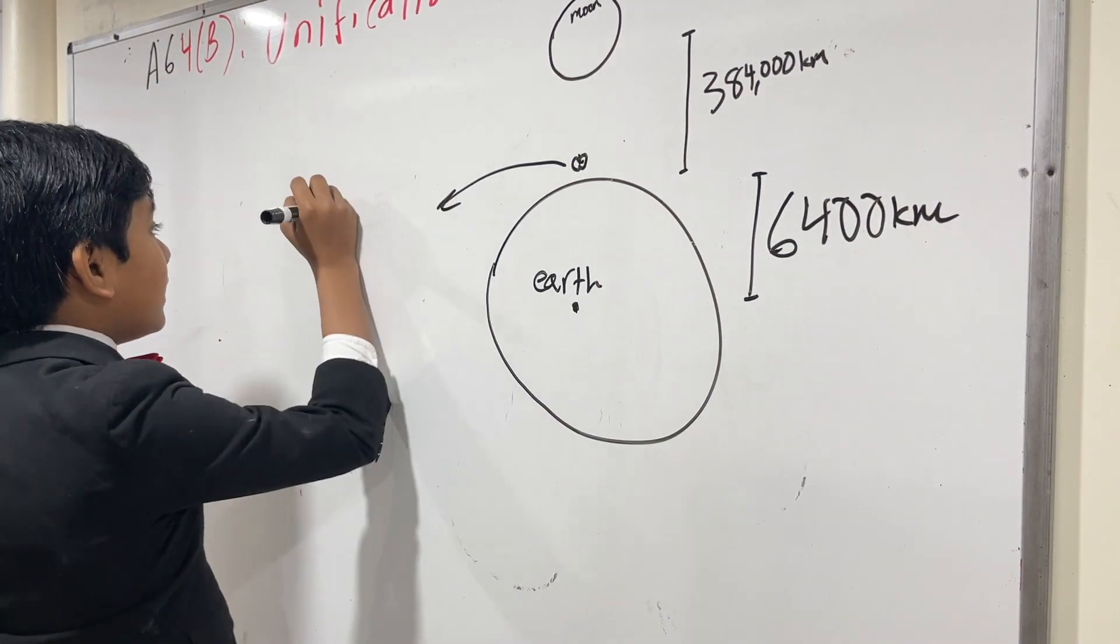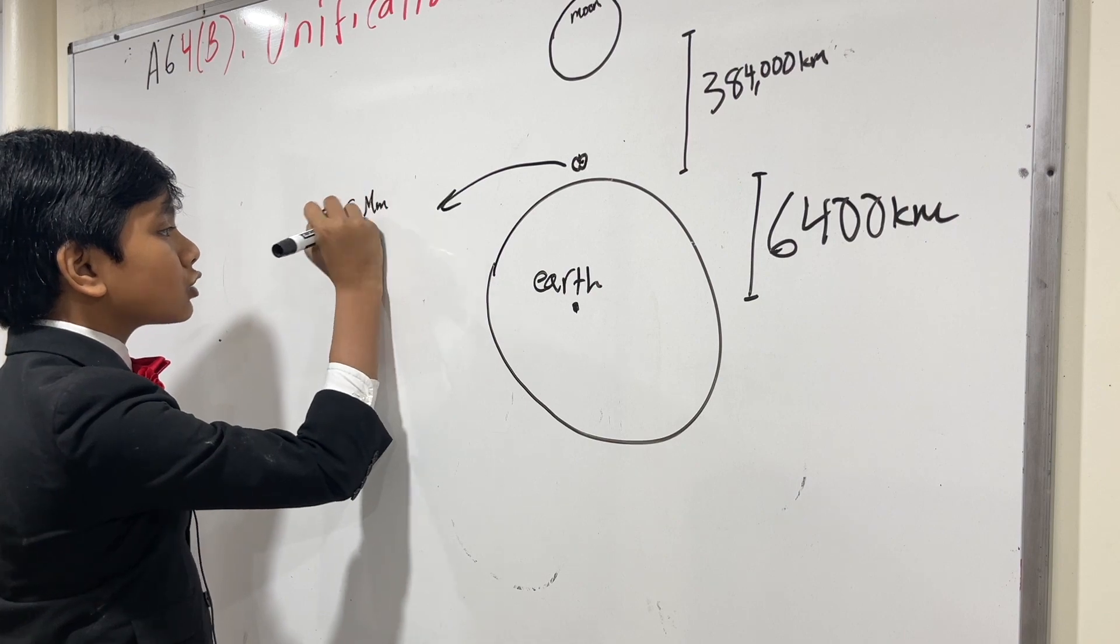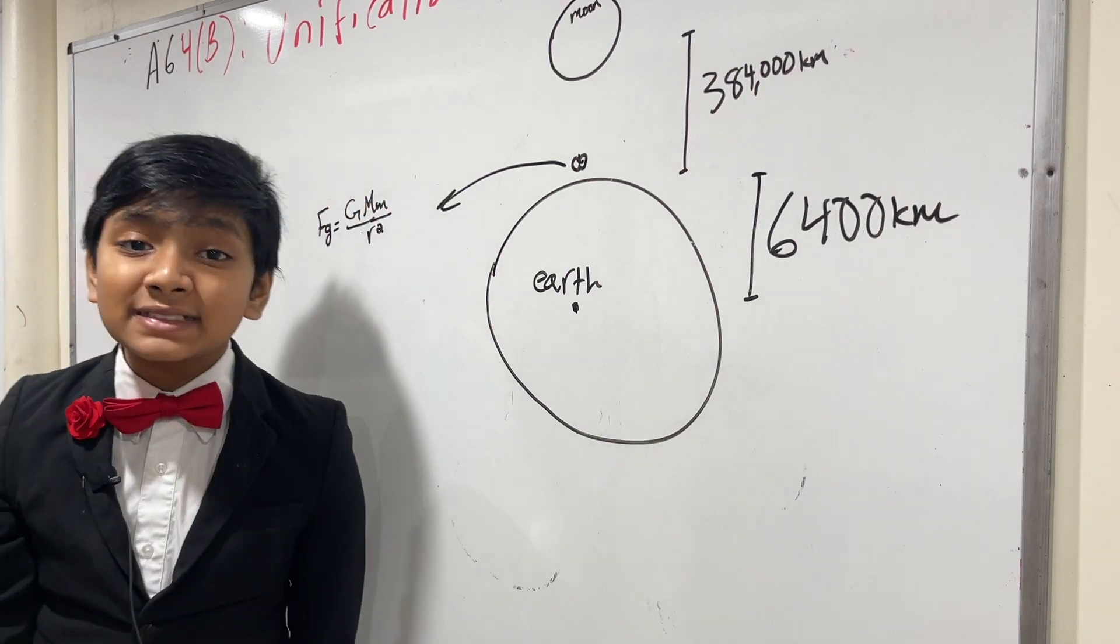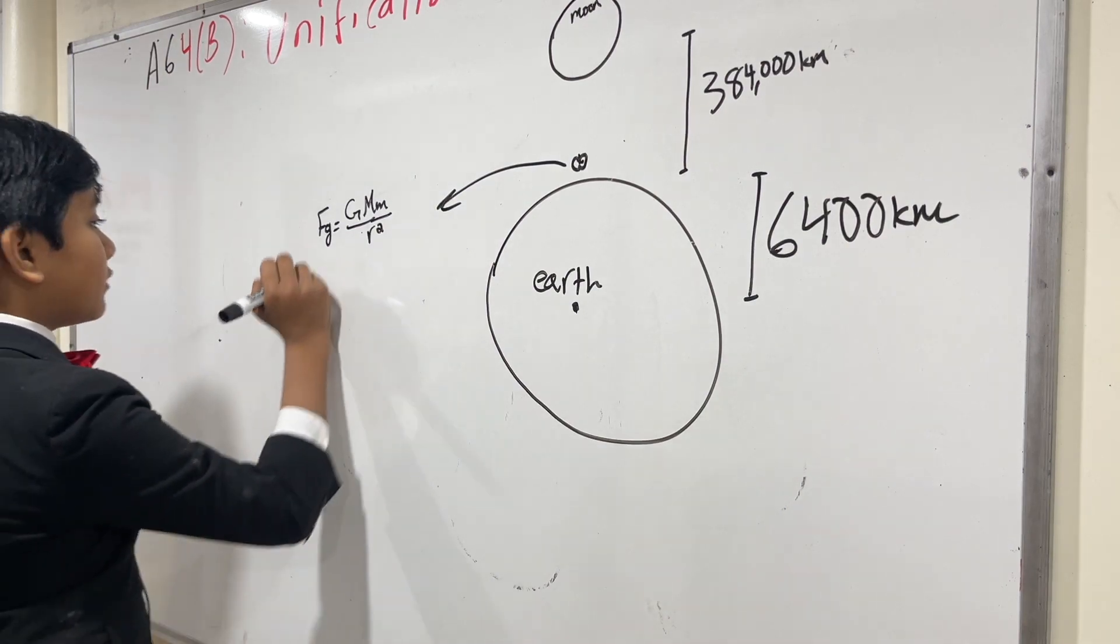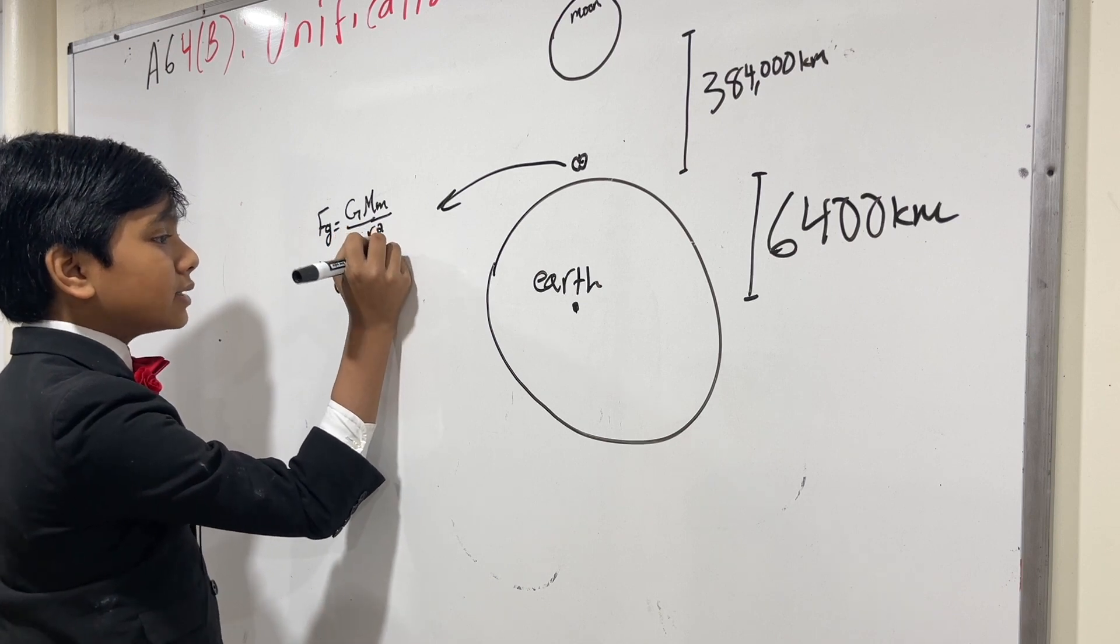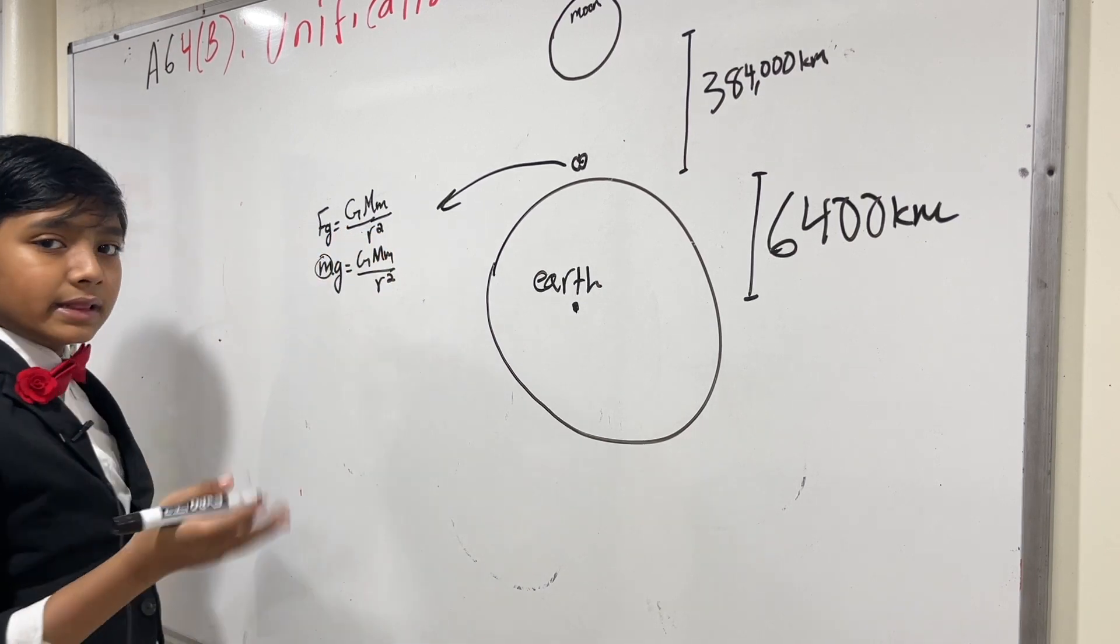So we get Fg is G big M little m over r squared. And we're trying to look for our gravitational acceleration. So we would be solving for g here. So we get little mg is equal to G big M little m over r squared.